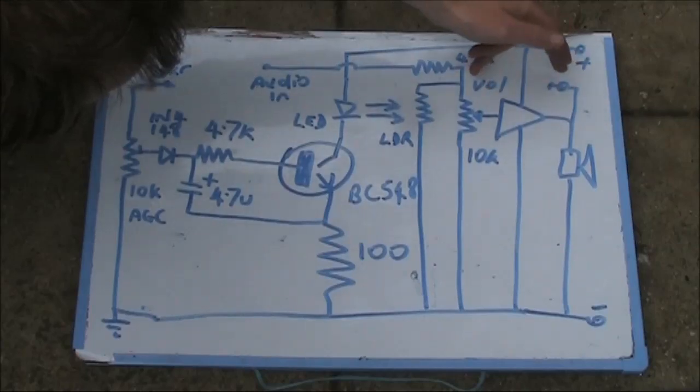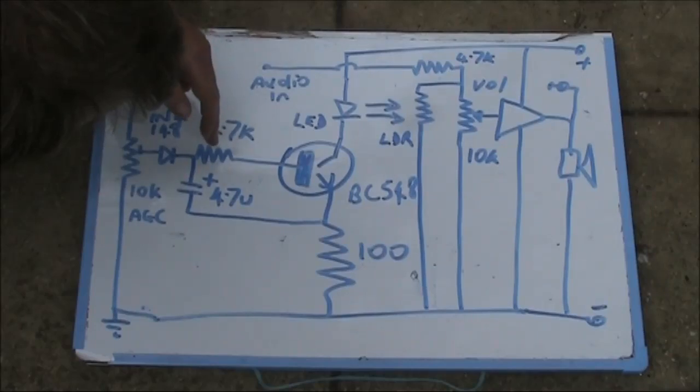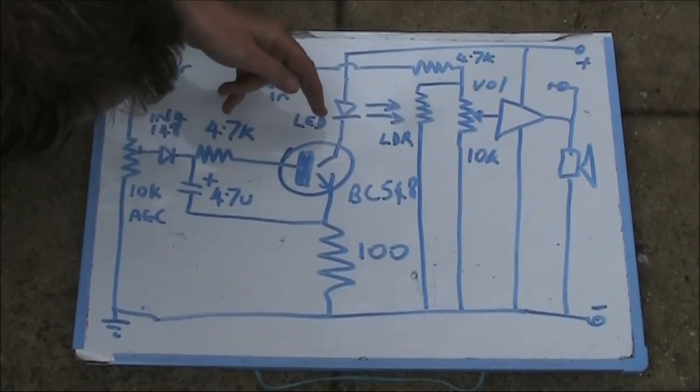The audio from the speaker is connected to this 10K potentiometer, which sets the AGC level. That is rectified by this diode, which could be any type, a 1N4148 is what I used. That goes into a resistor and then into the base of this transistor, which is switched on when there's sufficient audio level.